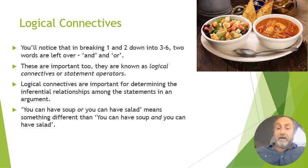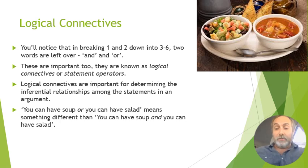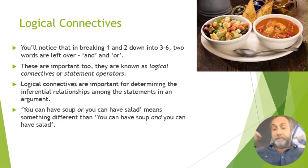These tiny words make a huge difference. 'You can have soup or you can have salad' means you get one of them — not necessarily both. 'You can have soup and you can have salad' means you get both. 'And' says here are two things that are true; 'or' says at least one of these things is true. Very different functions in English with very different logical implications.